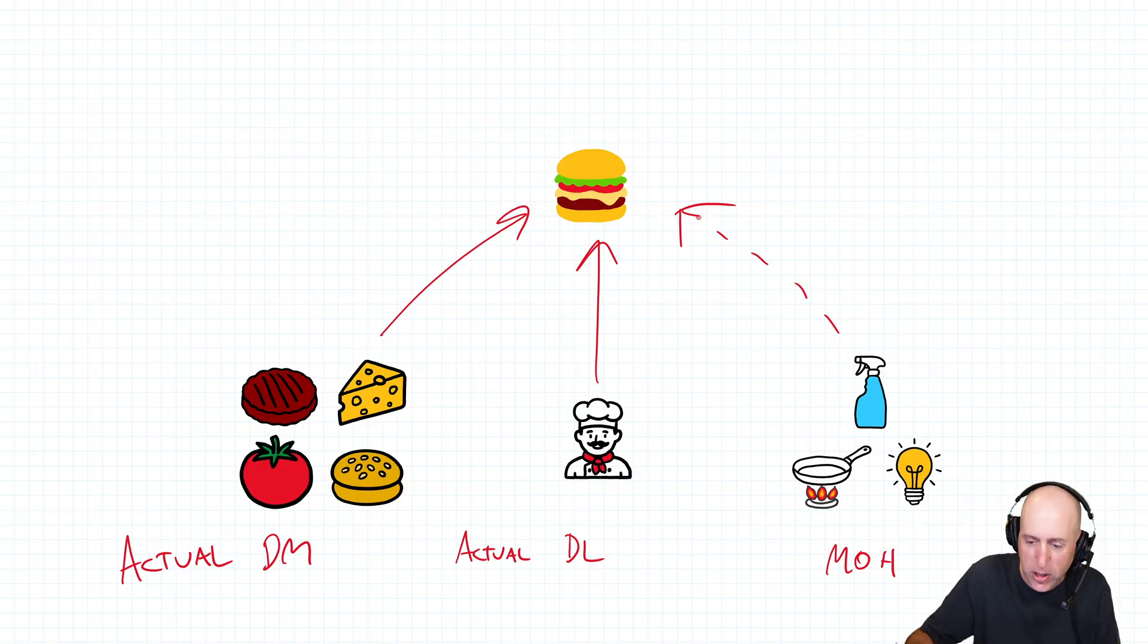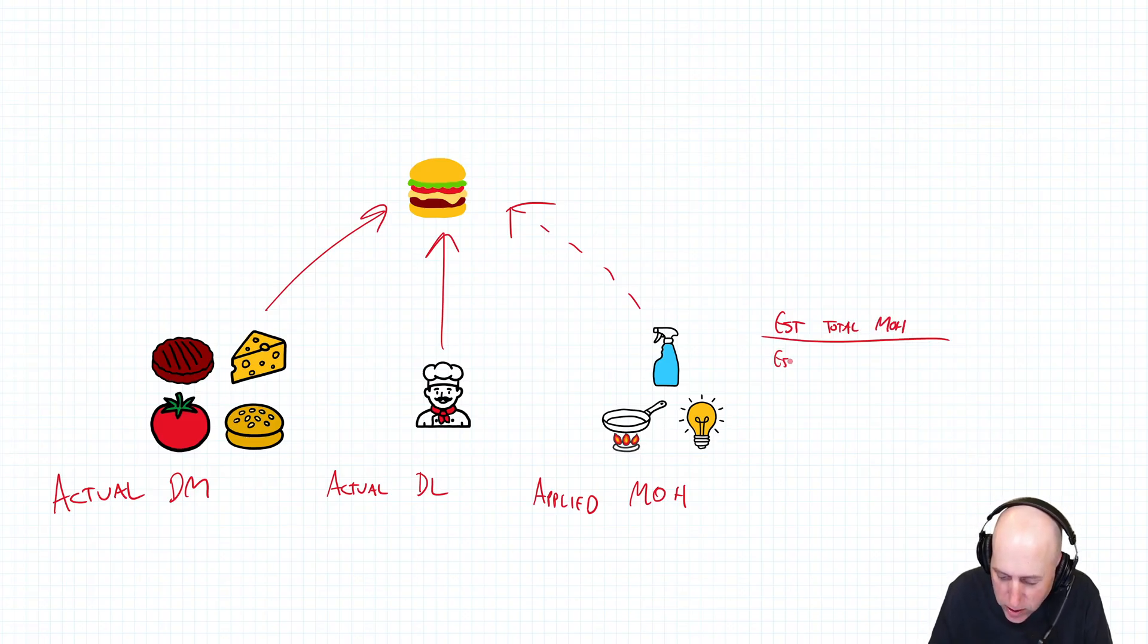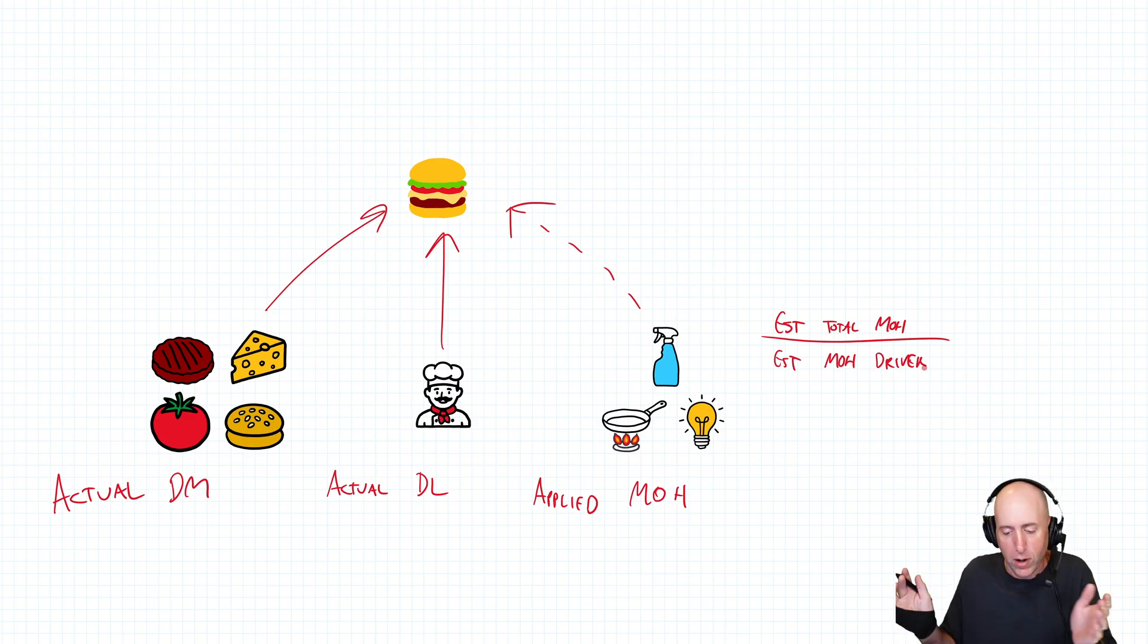When we estimate how much utilities cost went into the burger, we call that applying overhead. So we use actual material, actual labor, and applied overhead to figure out the cost of the product. When we learned how to apply overhead, we use something called the predetermined overhead rate. The predetermined overhead rate is the estimated total overhead divided by something we choose as an overhead driver.